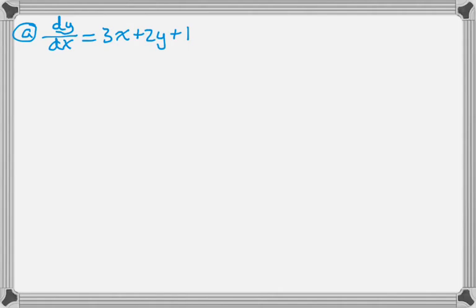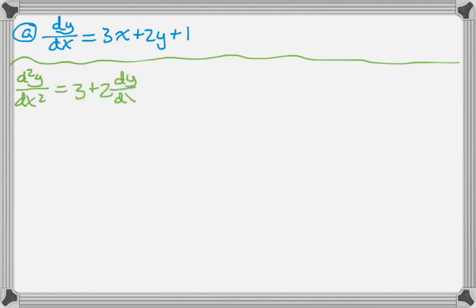We're given this, and what we're asked to find first is the second derivative in terms of x and y. So it's implicit differentiation, because y is a function of x. The derivative of 3x is 3, but the derivative of 2y is 2 dy dx, and then we just substitute back in because we know what dy dx is.